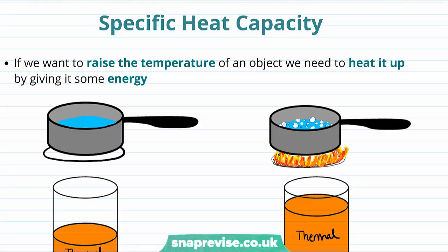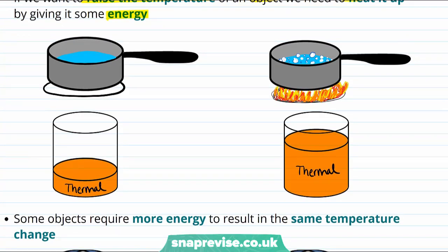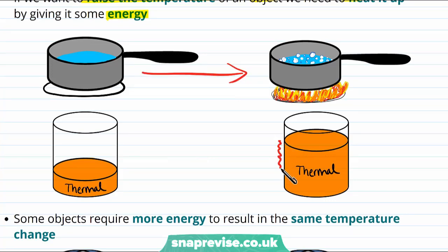Specific heat capacity is all about trying to raise the temperature of objects. If we want to raise the temperature of an object, we need to heat it up by giving it some energy. For example, if we want to boil a pan of water, then we need to put some extra energy in its thermal energy store.